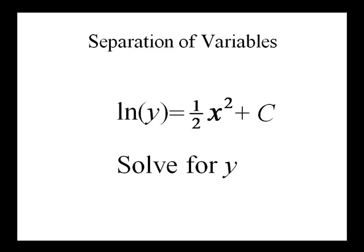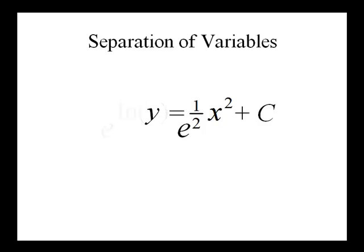The next step is to solve for y. In order to solve this equation for y, one way of doing so is to make both sides exponents of e. The property on the left-hand side says e to the natural log of y is just equal to y. So we have y equals e to the quantity one-half x squared plus c.